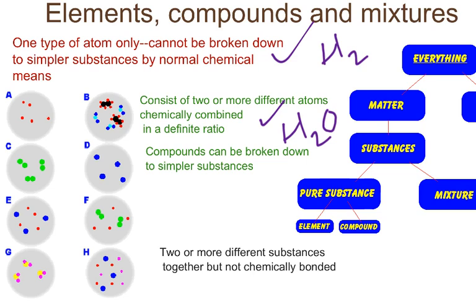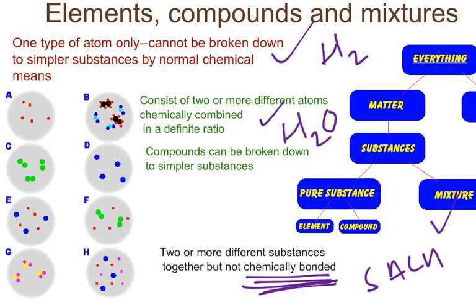Now we have mixtures. Mixtures have two or more different substances together, but the important thing is they are not chemically bonded. For example, if you have a salad, each individual component holds on to its identity — they're just mixed together. Another famous example is salt water: each thing has its own identity, they're mixed together, but they're not chemically combined.